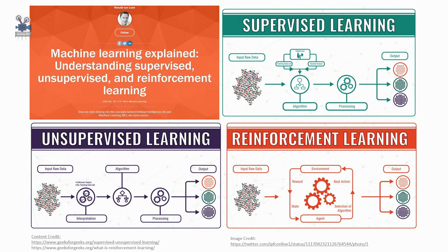Here you didn't provide any training data or examples. Unsupervised learning is classified into two categories of algorithms. First is clustering: a clustering problem is where you want to discover the inherent grouping in the data, such as grouping customers by purchasing behavior. Second is association: an association rule learning problem is when you want to discover rules that describe large portions of your data, such as people that buy eggs also tend to buy bread.